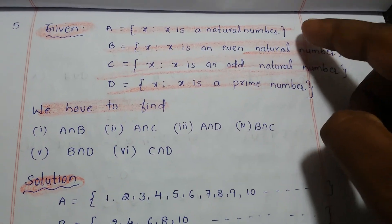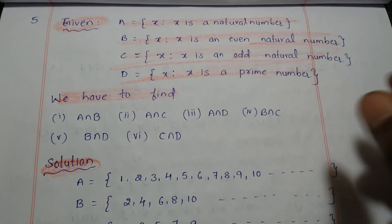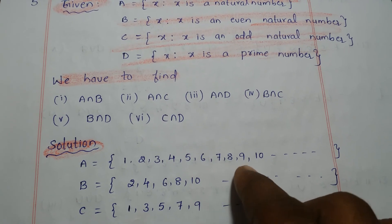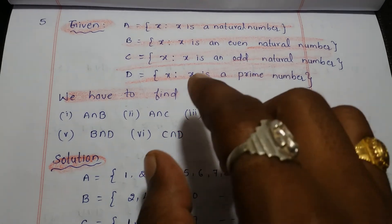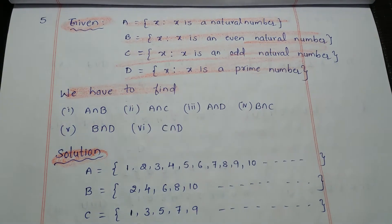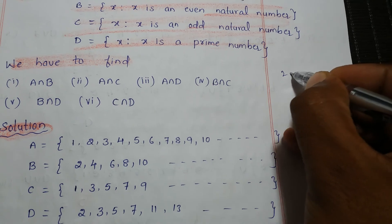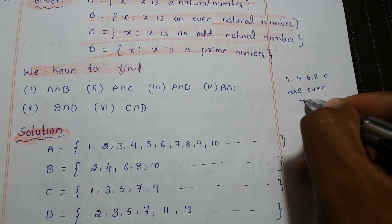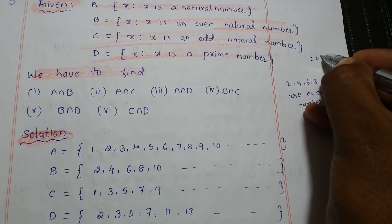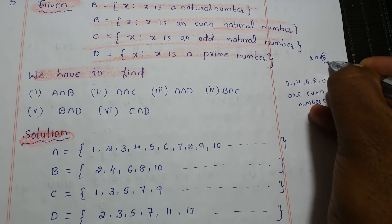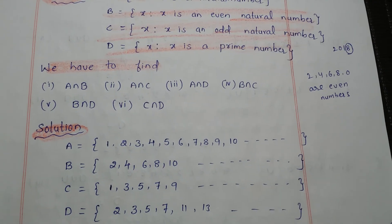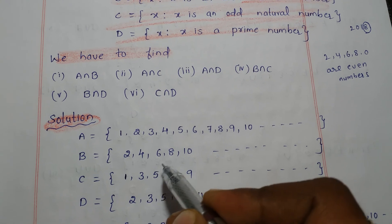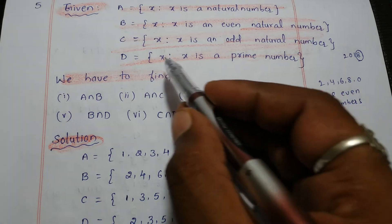A is the set of all natural numbers: 1, 2, 3, 4, 5, 6, 7, 8, 9, 10, and so on — infinitely many natural numbers. B is the set of even natural numbers. A number ending with 2, 4, 6, 8, or 0 is called an even number. So B is 2, 4, 6, 8, 10, and so on.